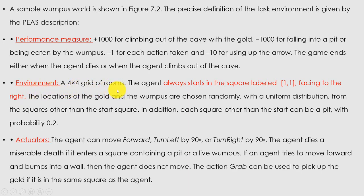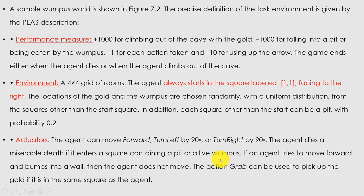The environment is a 4x4 grid of rooms. The agent always starts at the square labeled 1-1, meaning first row, first column. The location of the gold and the Wumpus are chosen randomly with a uniform distribution from squares other than the start. Each square other than the start can be a pit with a probability of 0.2. The agent can move forward, turn left by 90 degrees, or turn right by 90 degrees. The agent dies if it enters a square containing a pit or a live Wumpus.